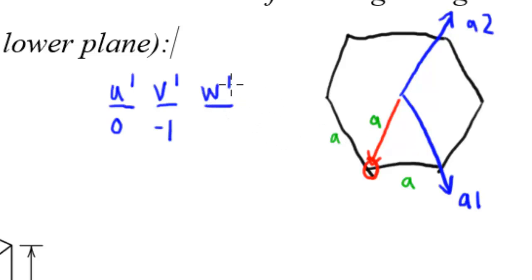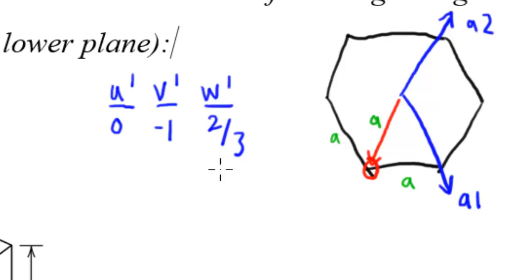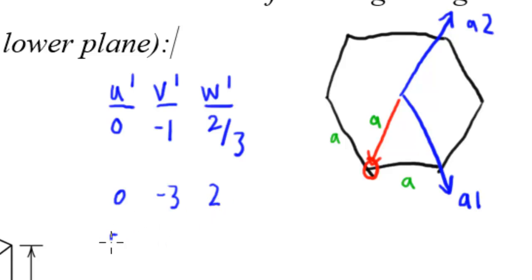Last but not least is the vertical direction. In the Z direction, we want to find W prime, and that's basically given as two-thirds up. So W prime is two-thirds. The next step is to multiply through by a common denominator — the only fraction here is the two-thirds, so we're going to multiply each of these by 3. That gives us 0, negative 3, and 2. If we're using a 3-parameter system, we simply enclose these in brackets: [0, 3̄, 2].